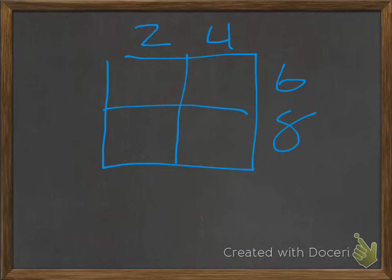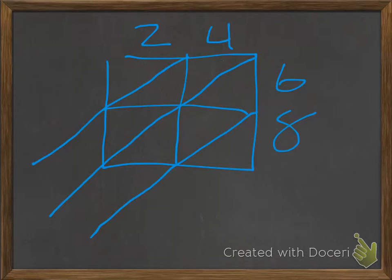So, the first step to do lattice is to draw lines like these from the corner of every box, going down through every corner of the box below.